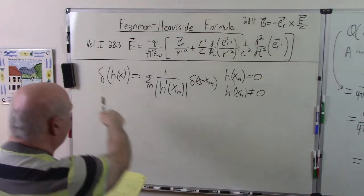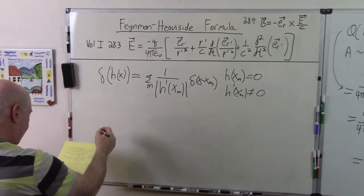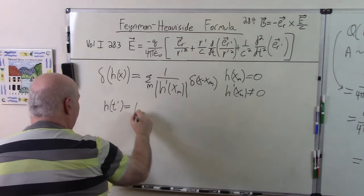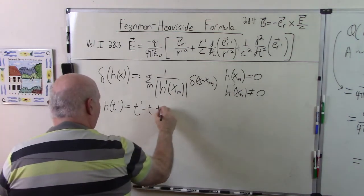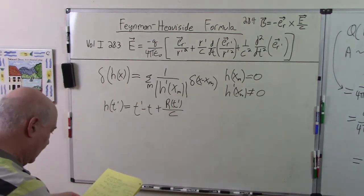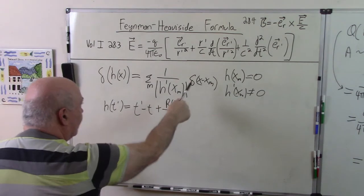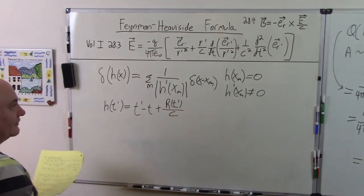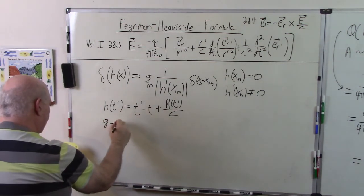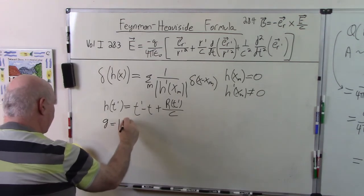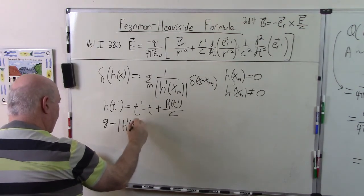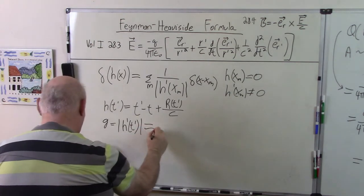So for our problem over there, our h, we have delta h and we have a different name of variables. But basically, our h of t' is equal to t' minus t plus r of t'/c. And now, let's evaluate this. There's only one root. I showed that in the other video. There's only one place where it hits the backward light cone. And we're going to define a new variable, call it g. Which is the absolute value of the derivative, h', what comes in this formula, at t'.